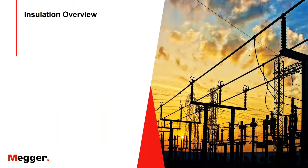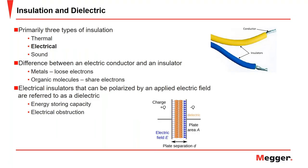Starting with an insulation overview. When we talk about insulation, we primarily talk about three types: thermal, electrical, and sound. Obviously today we're going to focus on the electrical side of insulation, often referred to as an insulator.